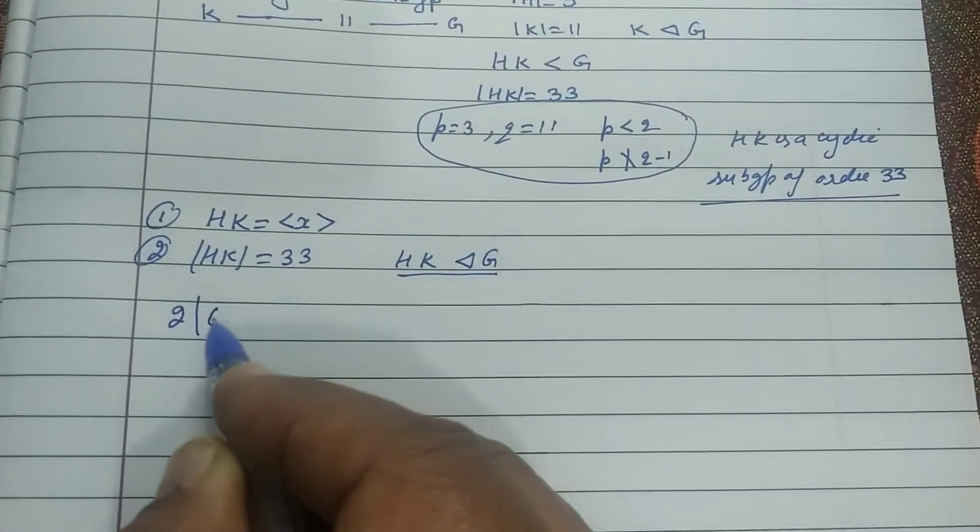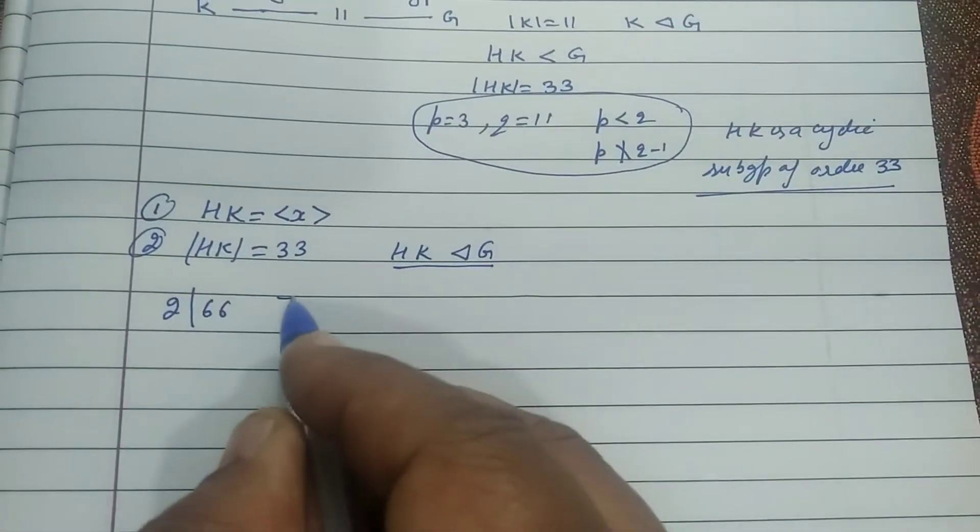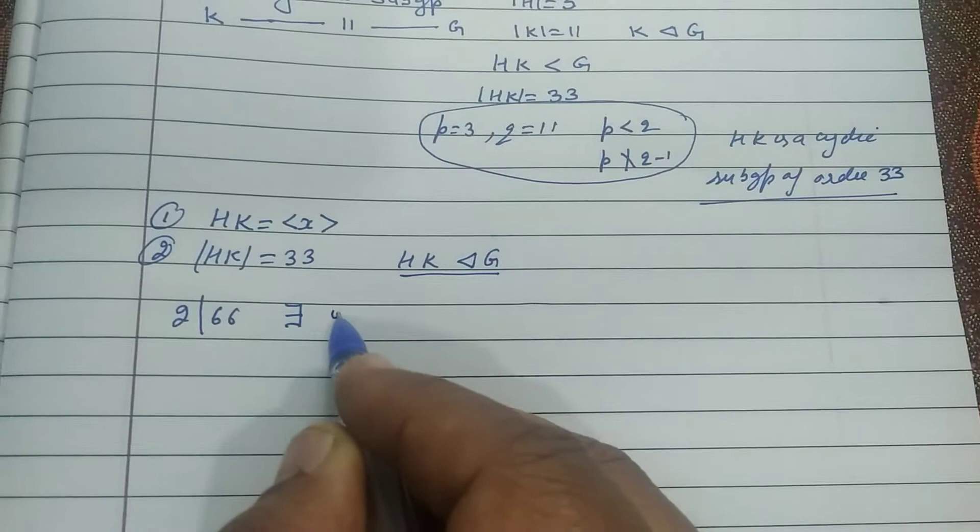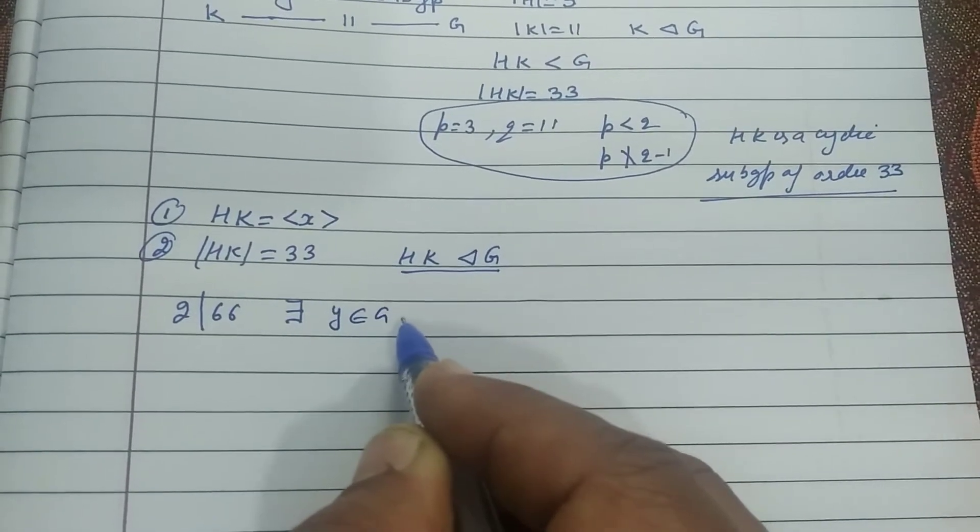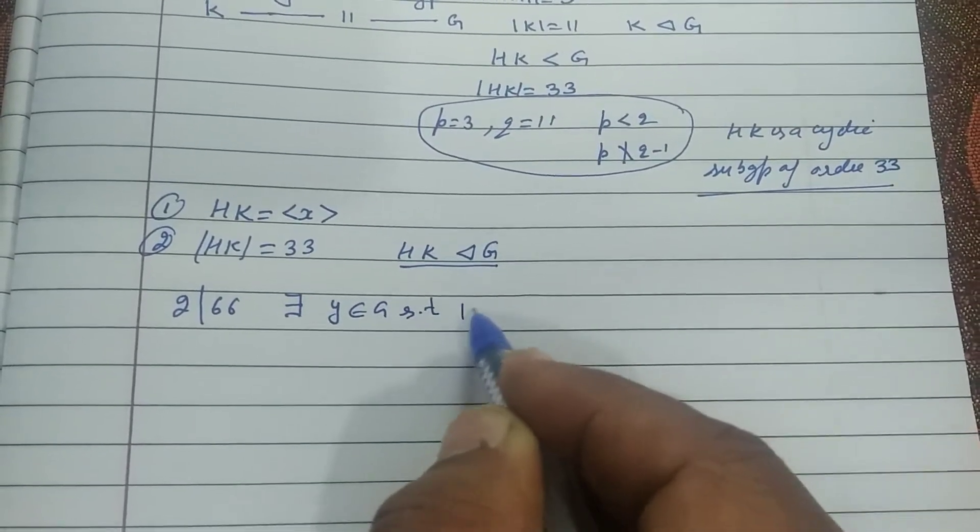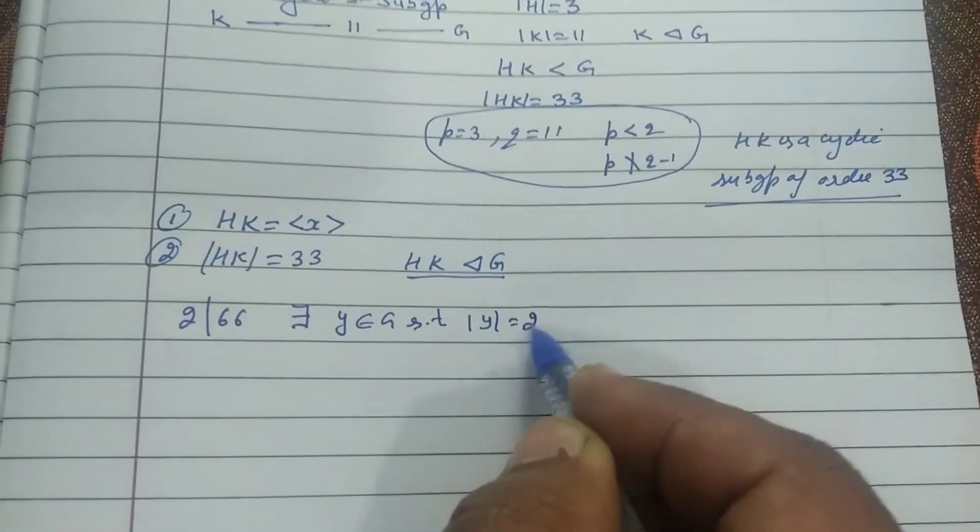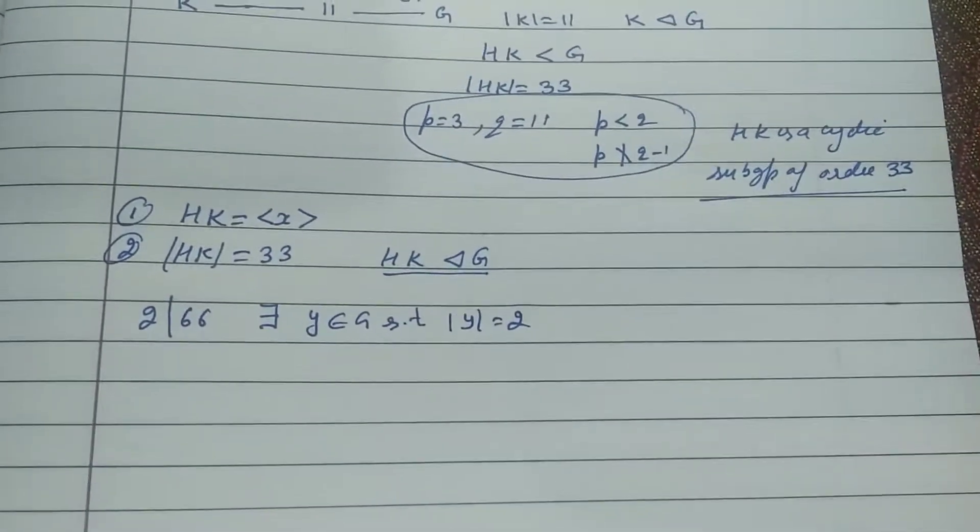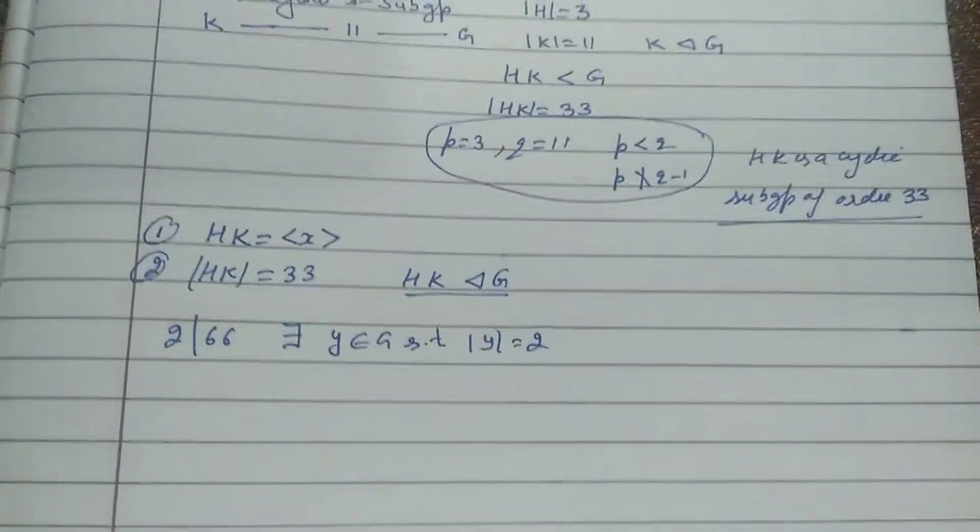2 divides 66. What it means? There exists at least one element, Y belongs to G such that whose order is 2. Yes, its order is 2.